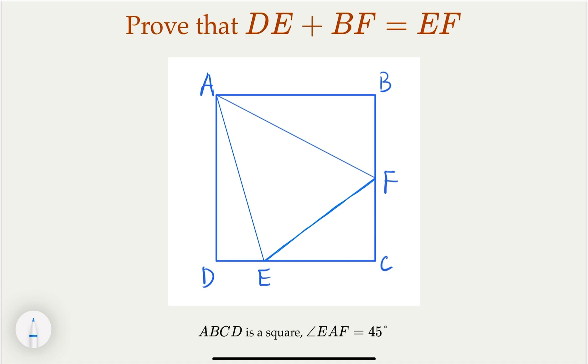This is a geometry problem. We're given a square, and angle EAF here is 45 degrees. We'll try to prove that line segment DE plus line segment BF add up to EF.